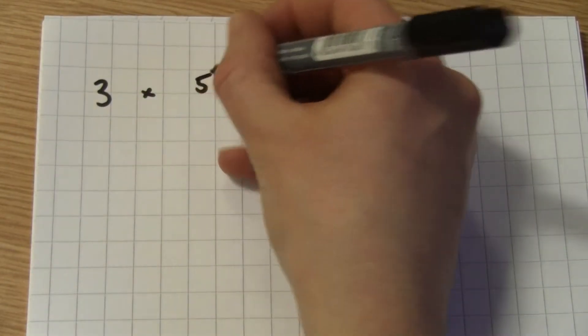So how do you multiply a fraction by a whole number? Let's take a look. 3 multiplied by 5/6.